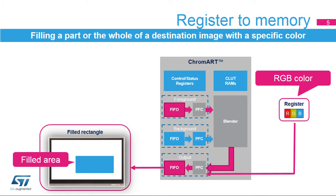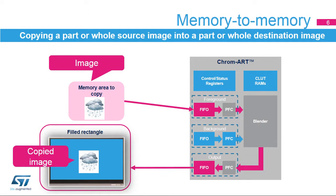Register-to-memory mode is used to fill a part or whole destination image with a specific color. The color value is set in a register of the output PFC. Memory-to-memory mode is used to copy a part or whole source image into a part or whole destination image without changing the color format.